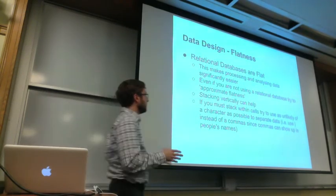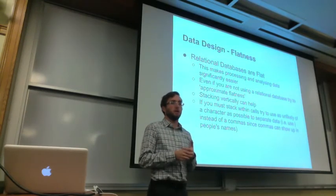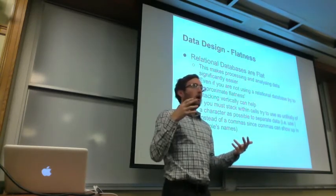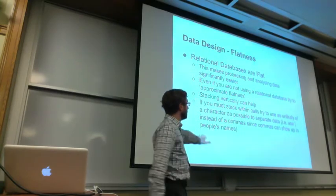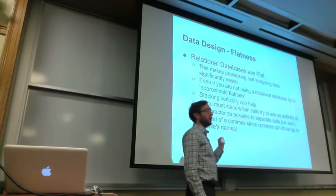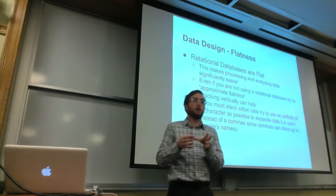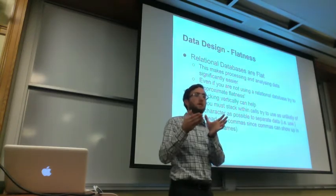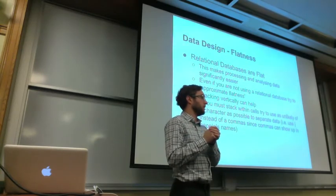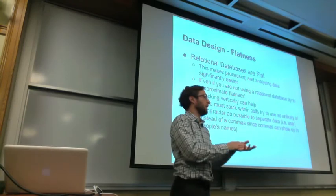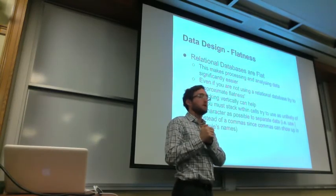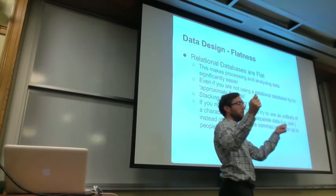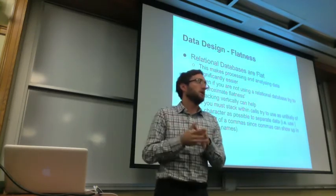If you find yourself in a situation where you have to stack information in a cell because of the way data was already designed or some other reason, one of the best things you can do is try to separate your stacked data by as unlikely a character as possible. Inevitably, when people try to do this, they'll have a name cell and separate it by commas or periods. But then someone puts in a name as 'last name comma first name,' and if you're trying to run a script to disaggregate this information, you'll end up splitting one person into two because you were using commas to separate.